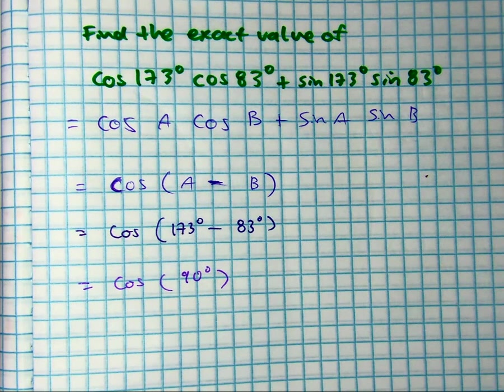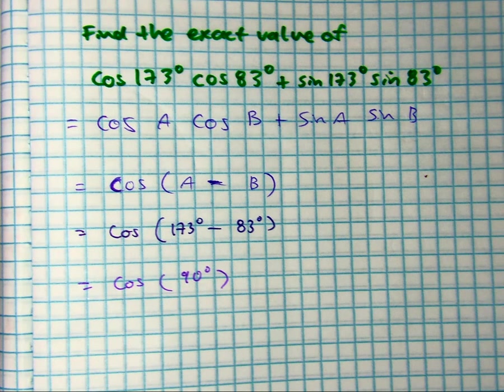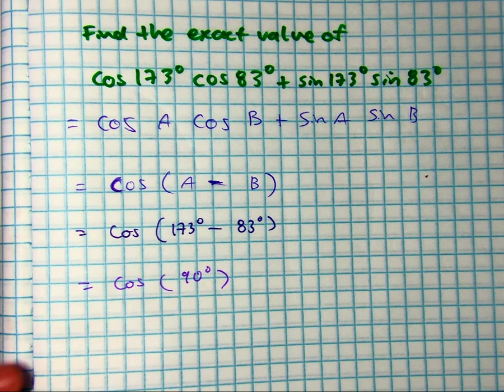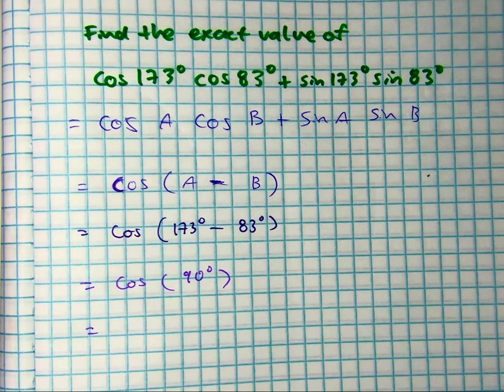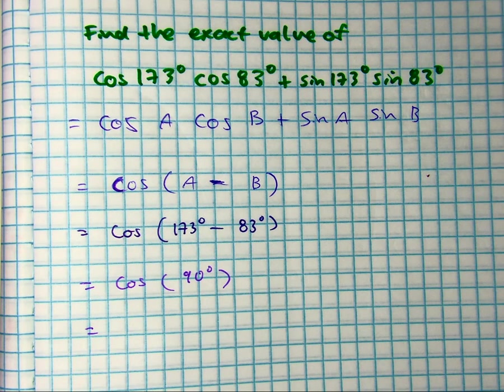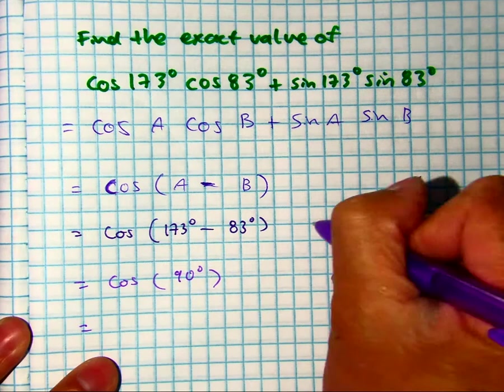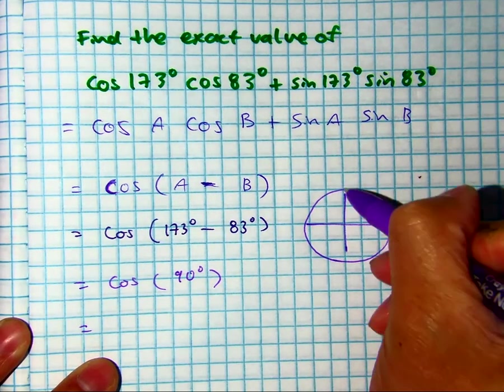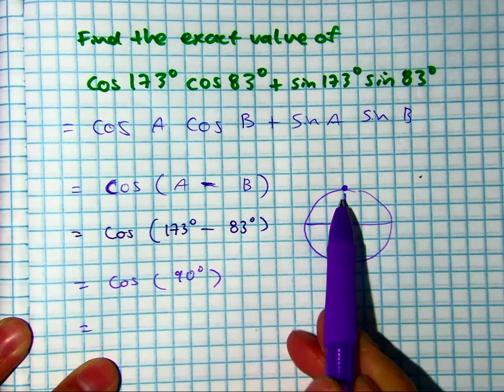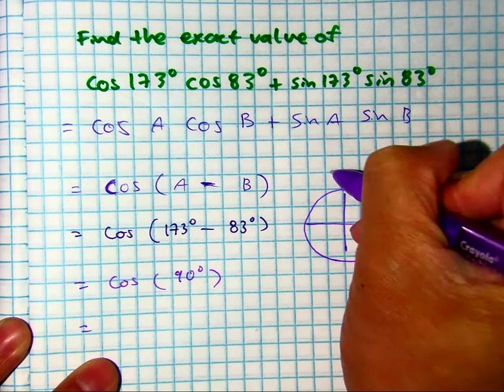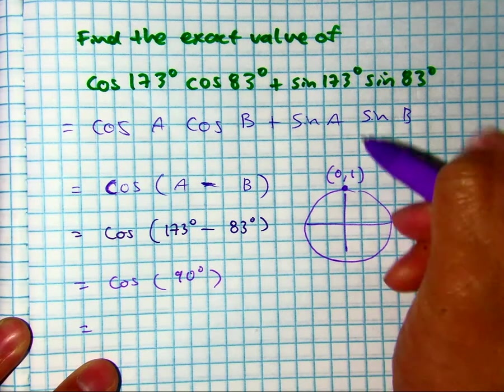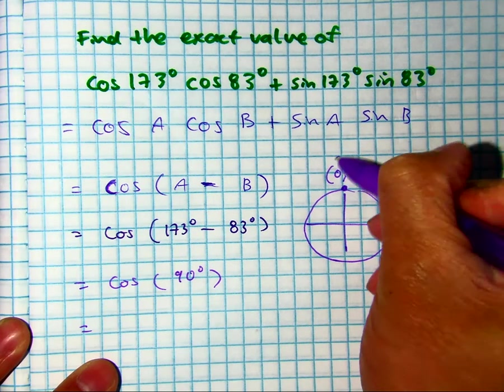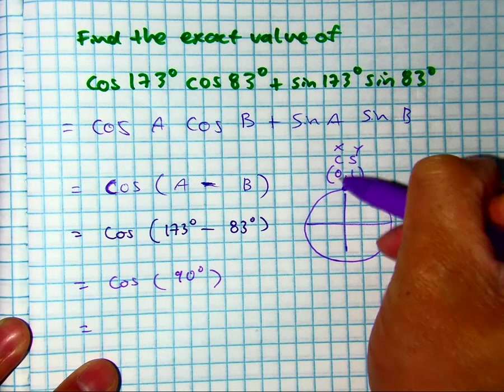Talk to your partner in 7 seconds. What's cosine of 90 degrees? Class, what's your order pair here? Zero. And cosine is the? X. So it is zero.